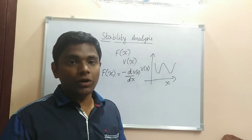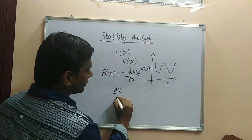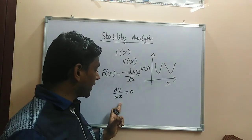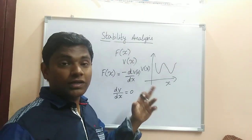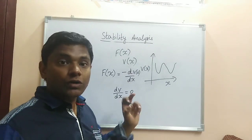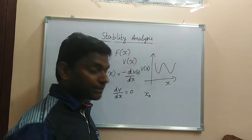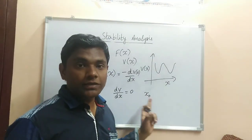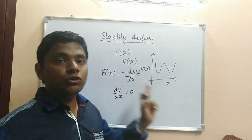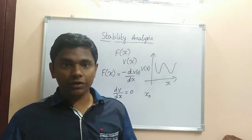To determine the type of equilibrium, use the formula dV/dx = 0 and find the particular value of x for which the gradient of the potential energy becomes zero. That particular value of x is denoted by x₀, which is called the equilibrium point — at that value of x the body is said to be in equilibrium.